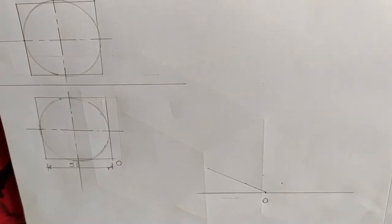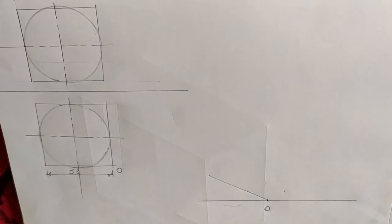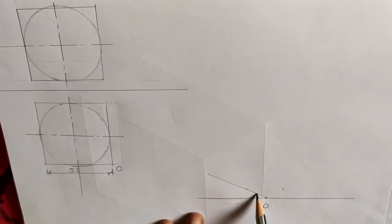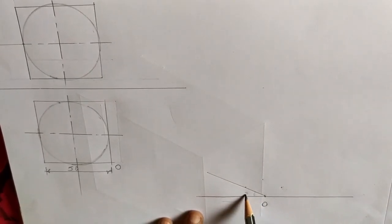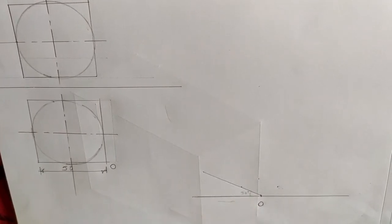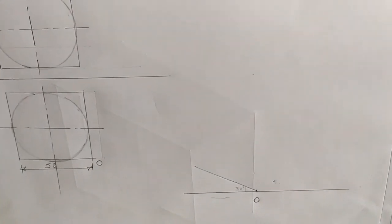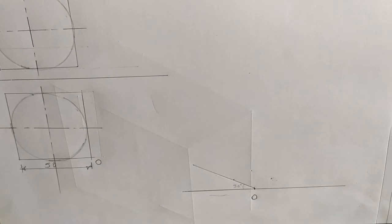Next, isometric view from the given orthographic views. The front view and top view is given and there is a center in between. So as per the procedure, draw a horizontal line.